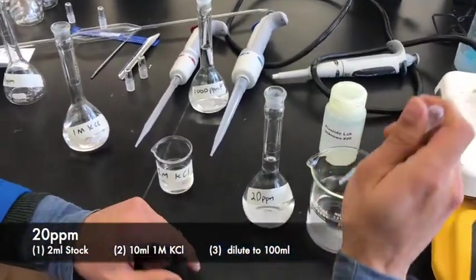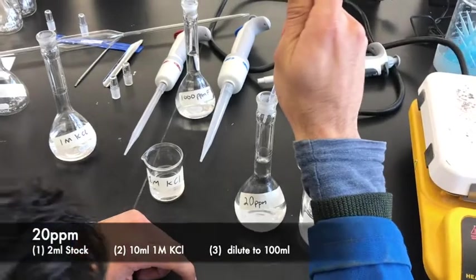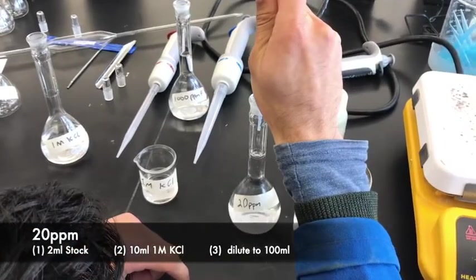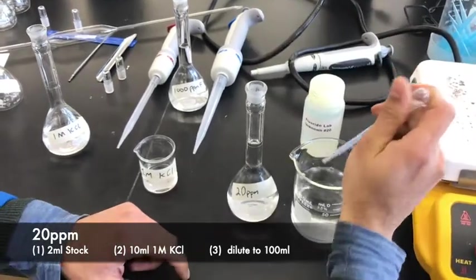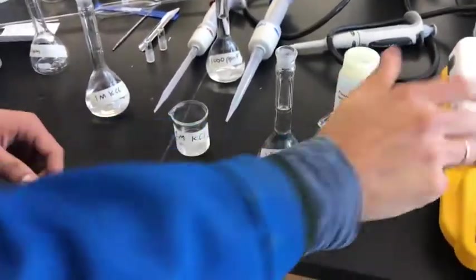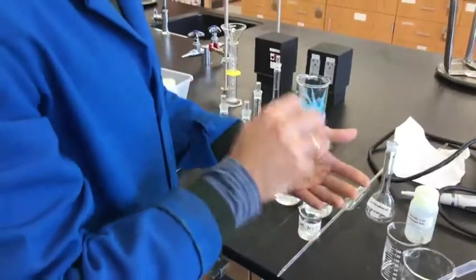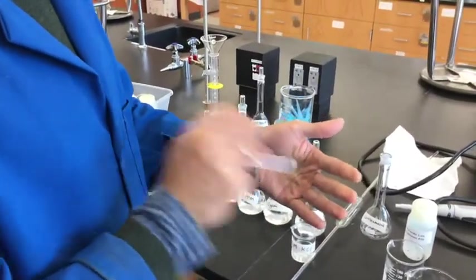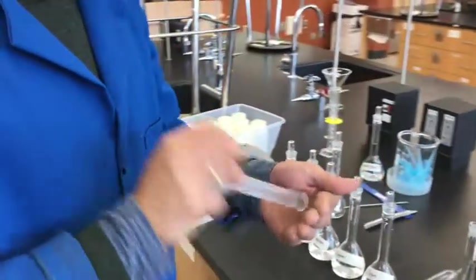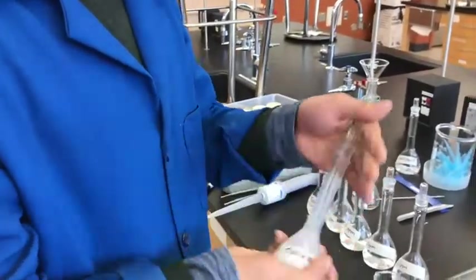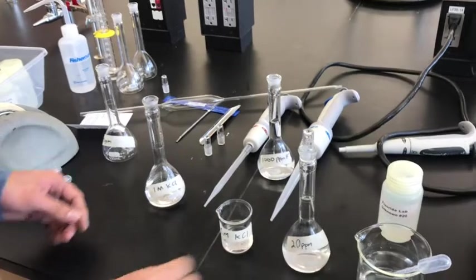To make it exact, you can always use a pipet. I'm going to shake the solution to dissolve everything. This is the right technique of mixing things in a volumetric flask. You just hold it on one side and shake it. Now we have 20 ppm.